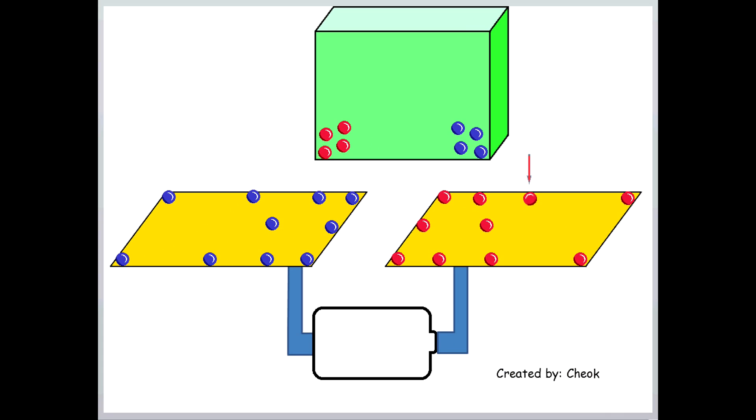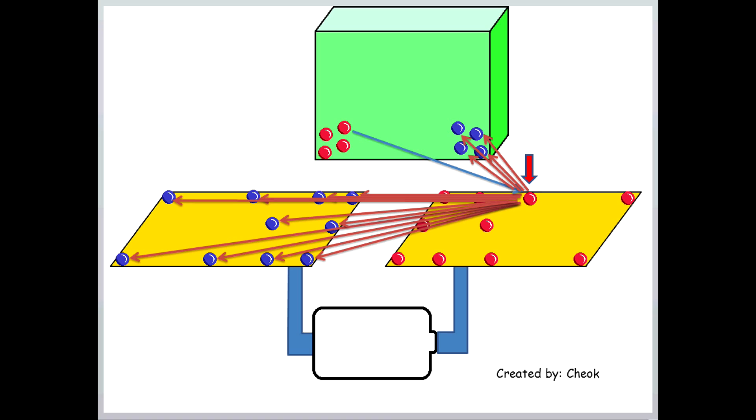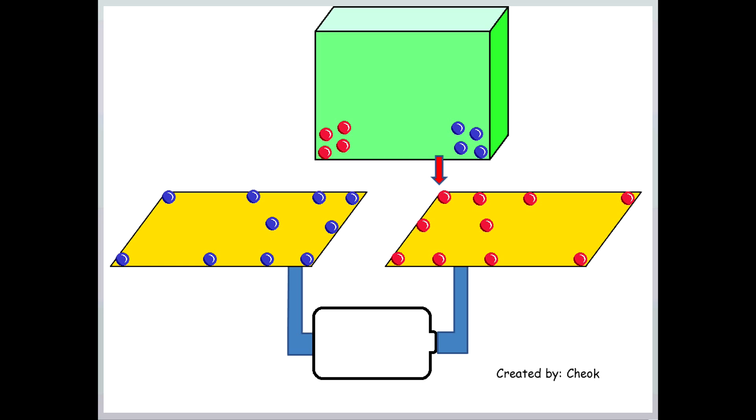Any charge in the system is subject to attractive forces from the unlike charges and repulsive forces from the like charges. This complex tug of war happens to every single charge in the system.